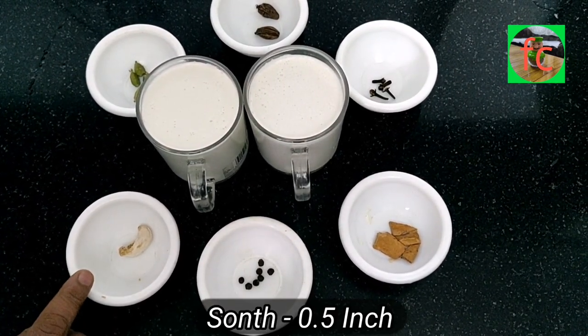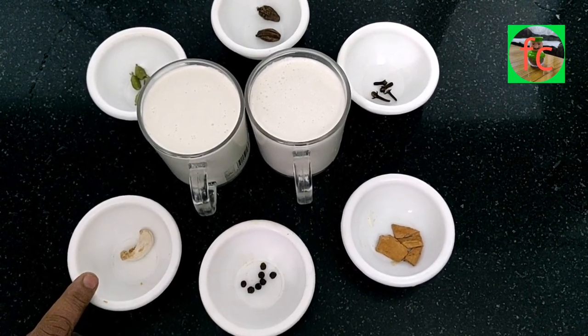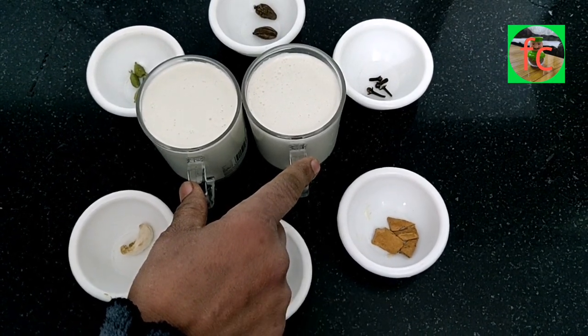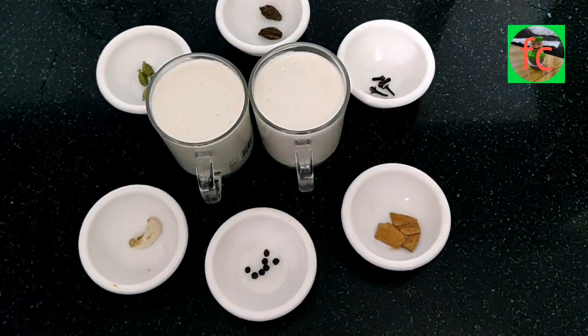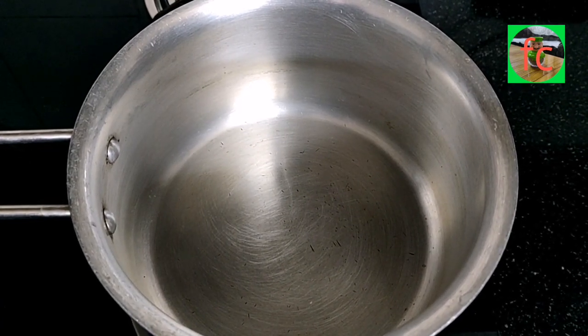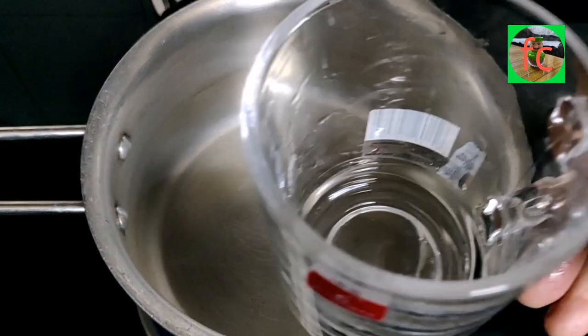One and a half inches of sonth (dried ginger). Let's start making it. First, we will put it on flame. Now we will add five cups of water.